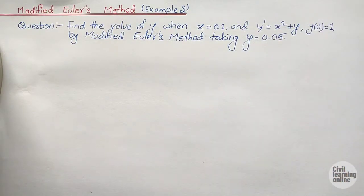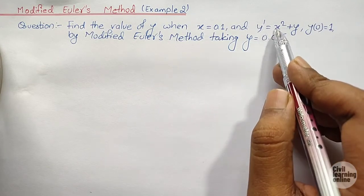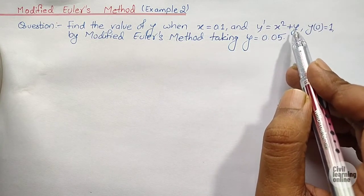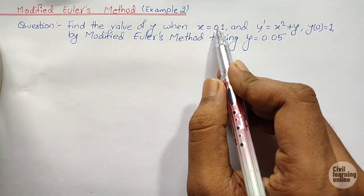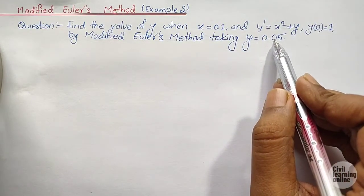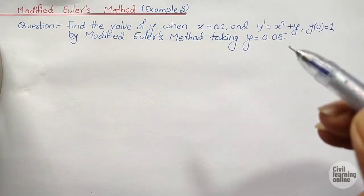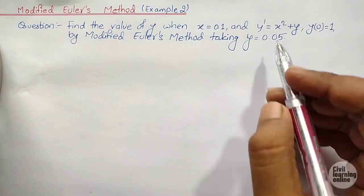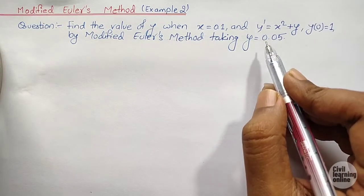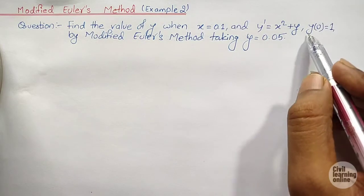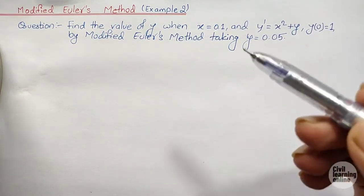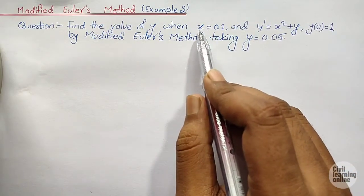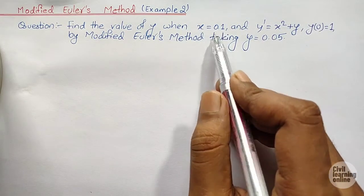Reading the question, we are given that dy/dx equals x squared plus y, and we have to calculate the value of y for x equals 0.1, with h equals 0.05. First we will find x₁, where x₁ equals x₀ plus h, and in the second step for finding the value of y₂ we will reach x equals 0.1.